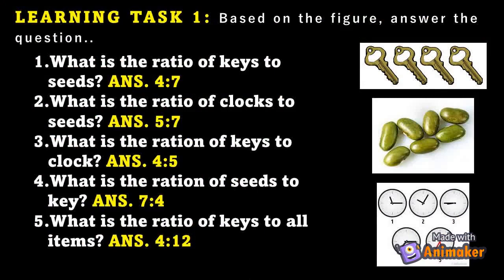Learning Task 1 — Based on the figures, answer the given questions. (1) What is the ratio of keys to seats? Answer: 4:7. (2) What is the ratio of clocks to seats? Answer: 5:7. (3) What is the ratio of keys to clocks? Answer: 4:5. (4) What is the ratio of keys to all items? Answer: 4:12.